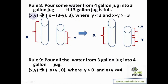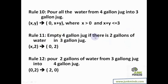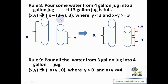Rule 8: pour water from the four gallon jug into the three gallon jug until the three gallon jug is full. The amount needed is three minus y. After this step, the three gallon jug holds three gallons and the four gallon jug holds x minus (three minus y). Rule 9: pour all the water from the three gallon jug into the four gallon jug — the four gallon becomes x plus y and the three gallon becomes empty. This requires the combined water to be at most four, otherwise water would overflow.